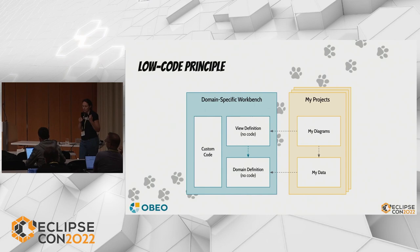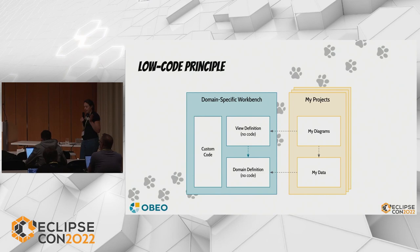A domain-specific modeling workbench is composed of both a domain and a view. The domain definition specifies the structure of your data, and the view definition specifies the structure of your visual editors. Both can be defined with no code in Sirius Web. You should also know that Sirius Web is an accessible framework, but that topic will be addressed by two other talks this week, so I will talk only about the low-code part here.